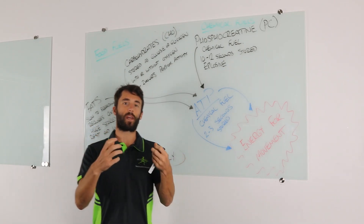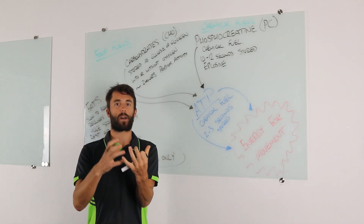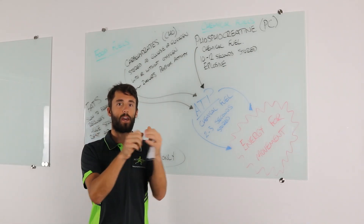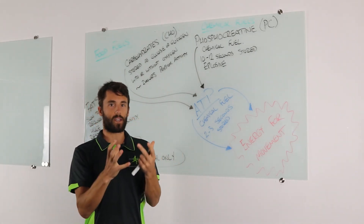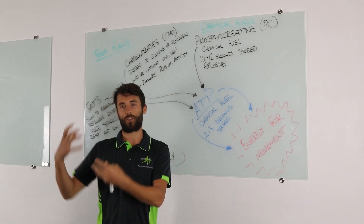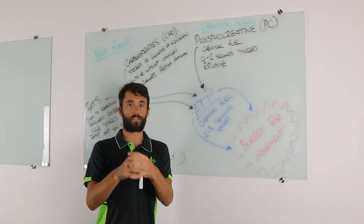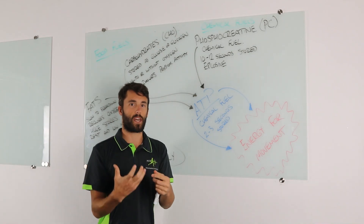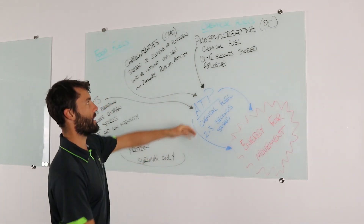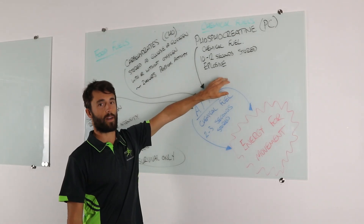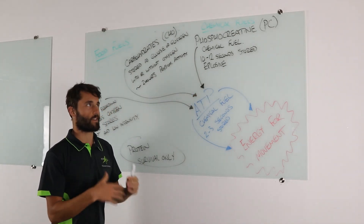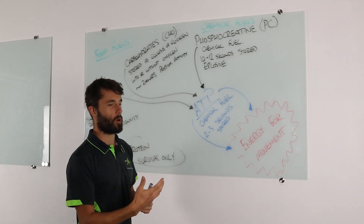So what we need to do is resynthesize the ATP. We need to recharge — reattach this phosphate molecule back to the ADP and we've got ATP again. We're constantly breaking this down for energy and then using other fuel sources to resynthesize it so we can keep getting that energy. The first other chemical fuel we'll talk about is phosphocreatine — PC — a chemical fuel that we have stored in the body.